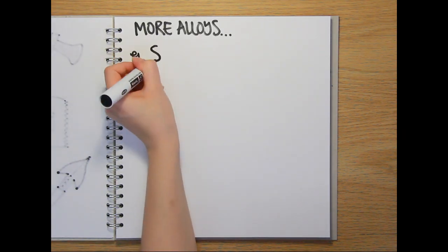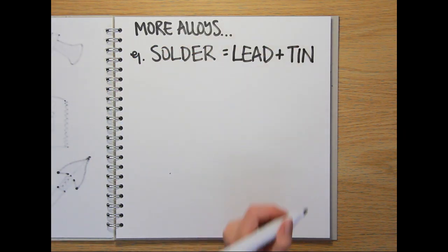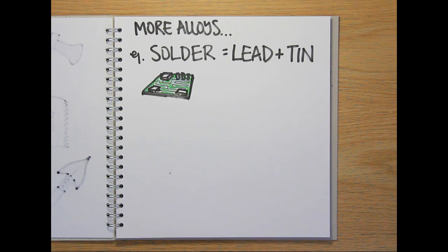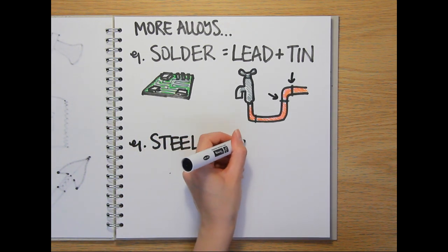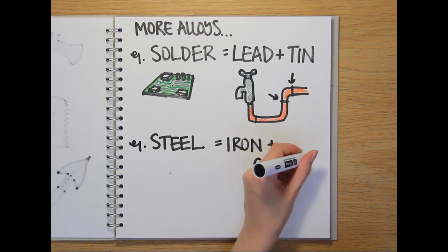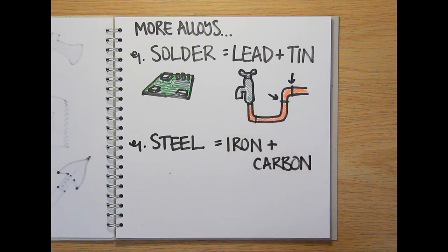Another example of an alloy is solder, a low melting point alloy of lead and tin that's used to connect components on electronic circuit boards and to join copper pipes together around the house. And where strength is a priority, steel, which is a mixture of iron and carbon with trace amounts of a few other metals, is hard to beat.